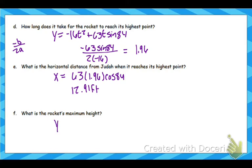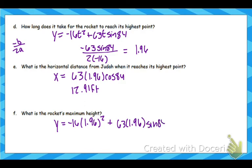Maximum height — again, we know when. So take the y equals equation, plug in your t value. Remember, that's a t squared. Just plug that into the calculator and that is going to give you more exactly what that answer is, and that is going to be 61.38 feet.